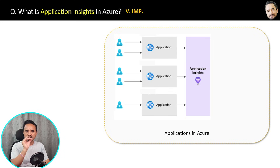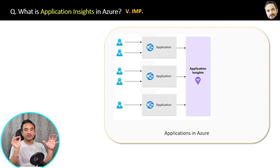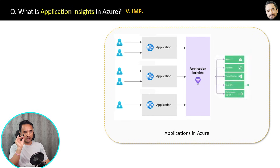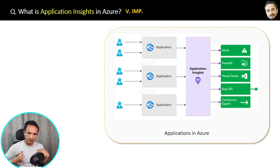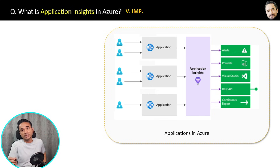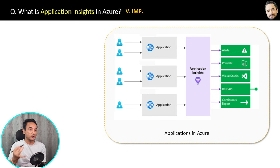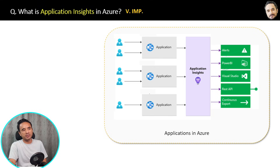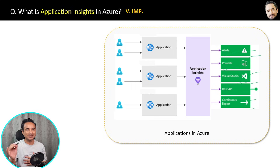All that activity data is present inside Application Insights. You can also set up alerts — for example, if there is a network error, create an alert — so that kind of automation you can set up with Application Insights as well. Tools like Power BI and Visual Studio can extract information from Application Insights.